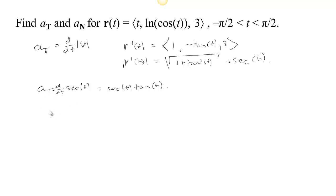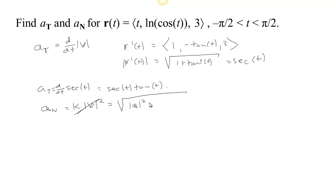Now to find a_N. a_N is kappa times speed squared, but finding kappa is usually hard. So instead, we use the square root of the magnitude of the acceleration squared minus a_T squared. To find the magnitude of the acceleration squared, we first need the acceleration. We've already found the velocity, so we just take its derivative.